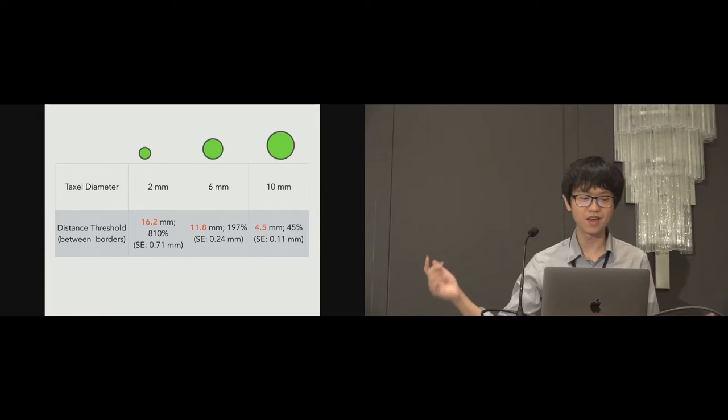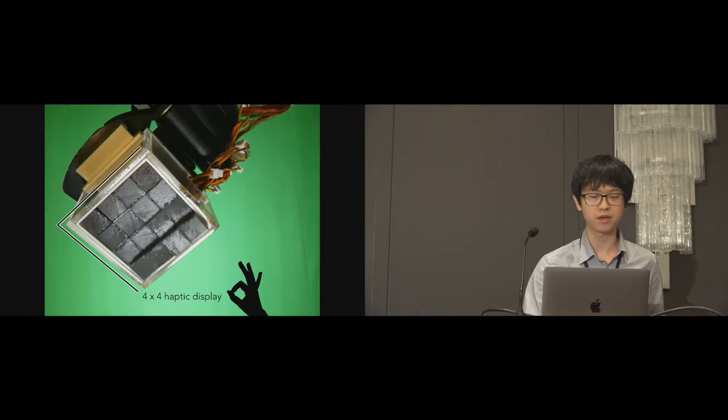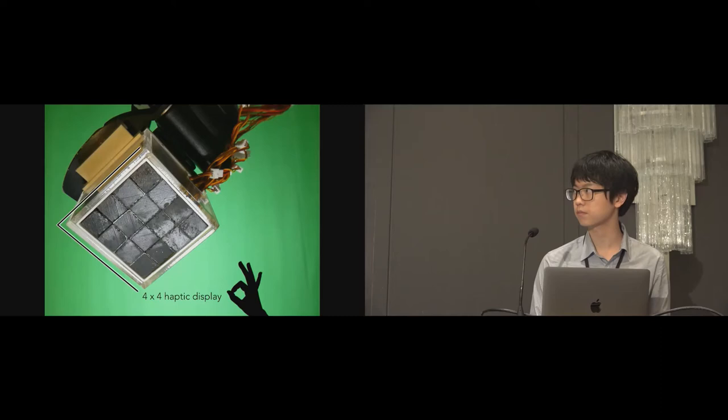This is the result. Surprisingly, taxel displays are able to simulate a realistic experience within a large location difference threshold. This suggests that even when visual and tactile stimuli are not aligned, they are still perceived as co-located as long as the distance between them is kept within the suggested threshold. Our RachelShape prototype was actually made based on the study results. We aim to explore more factors in the near future.